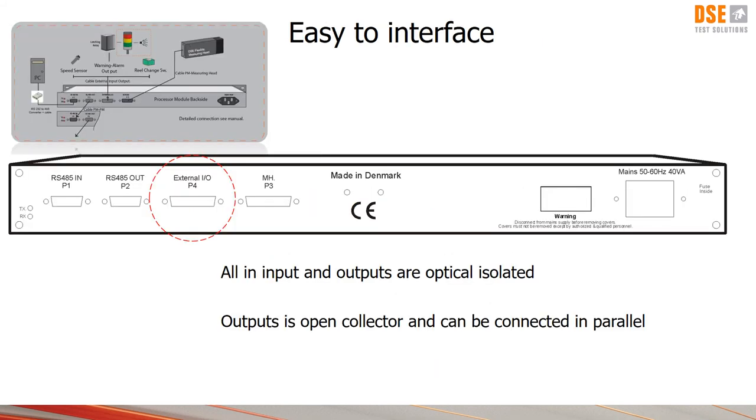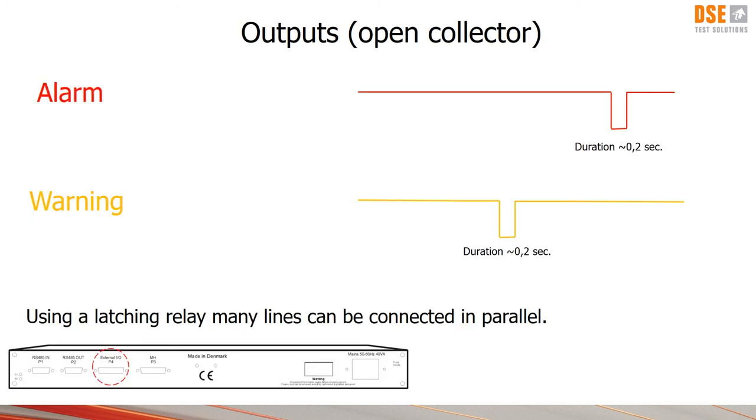Finally I would like to tell a bit about the in and output signals. Communication between the processor module and the PC is handled by USB or RS232 to RS485. And all modules can be connected in data chain and the PC can handle up to 99 processor modules. All in and outputs are optical and isolated. The outputs use open collector which makes it possible to connect them in parallel. The alarm and warning signal is changing status for around 200 milliseconds and by using a latching relay the alarm and warning stays until it's being reset by the operator.